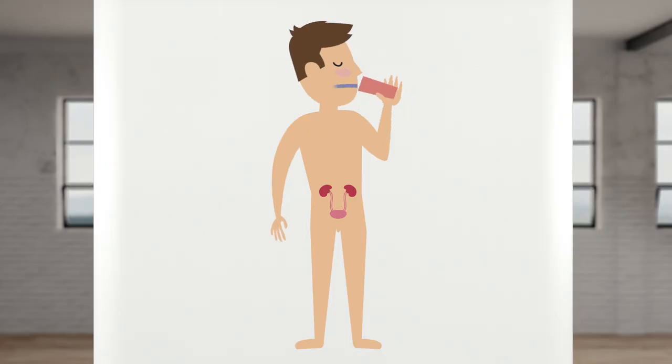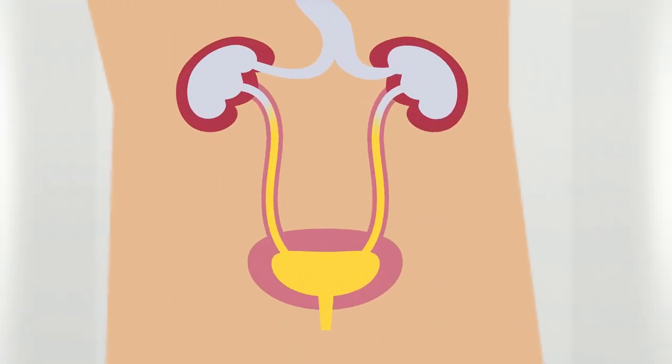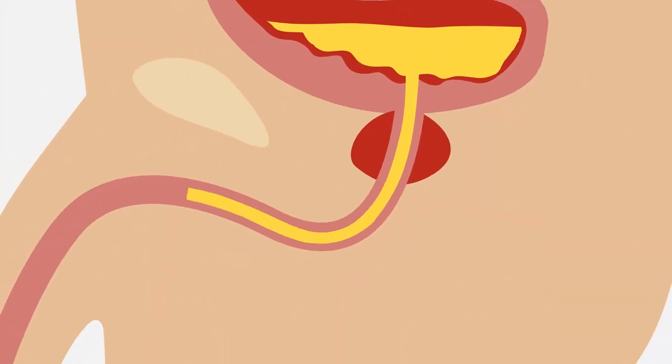Your body produces urine. The pee goes down to the bladder. The bladder looks like a balloon. It is small when it is empty but grows in size when it fills up. When it is full, it's time to pee. The pee goes out through the urethra.